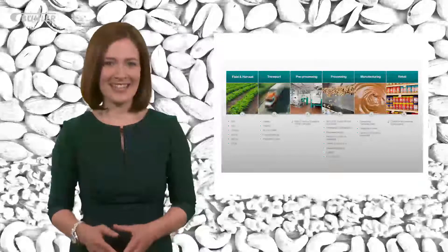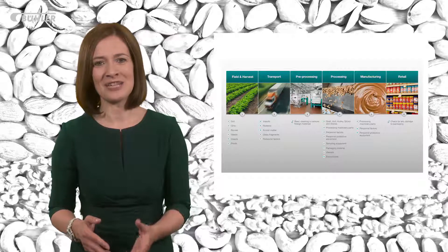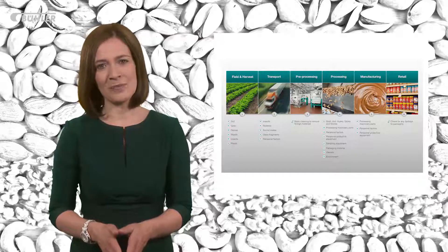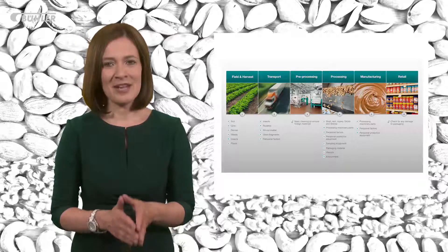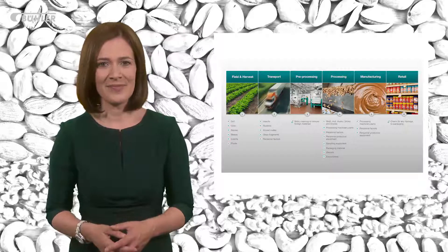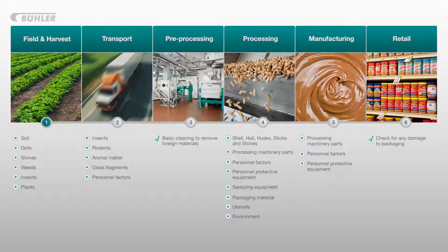We've looked at the process line and the types of foreign bodies that come into contact with nuts during different stages. Let's now look at the measures we can put in place during each stage to minimise the risk of foreign bodies. Going back to the harvesting stage, to eliminate the risk of soil, grit, stones, weeds, insects and plants from coming into contact with the nuts, harvesters could consider adopting good agricultural practices.